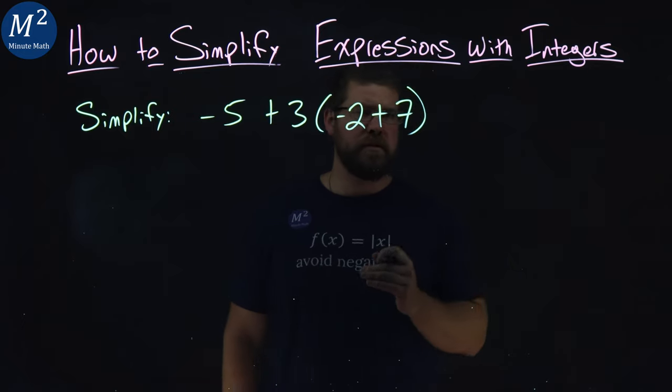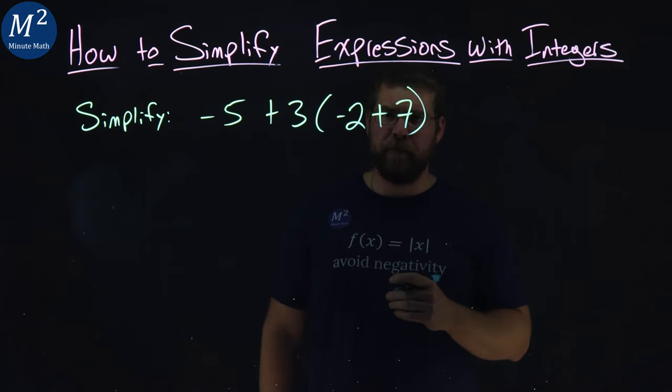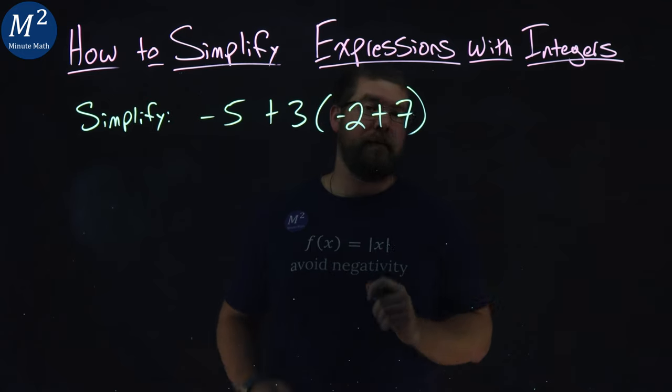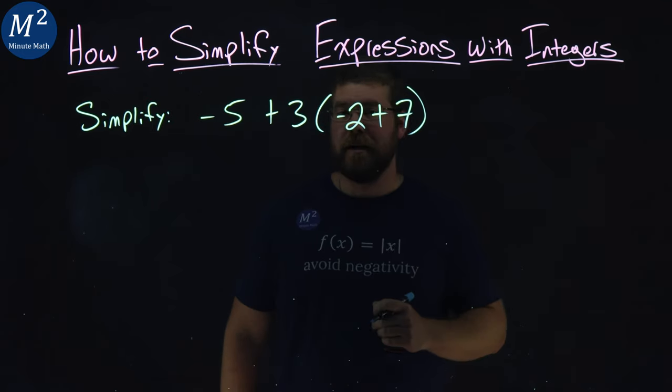We're going to keep our order of operations in line, our PEMDAS here. The first part I see is inside the parentheses. I have to deal with that first. Negative 2 and 7.